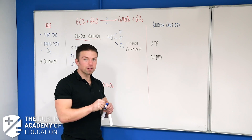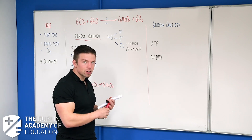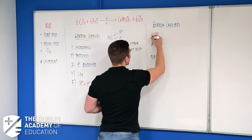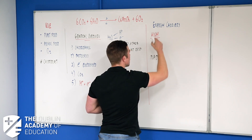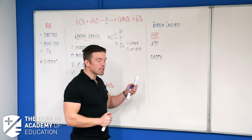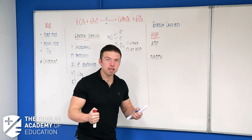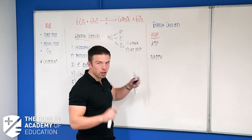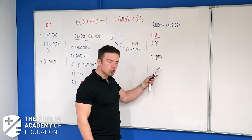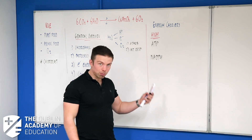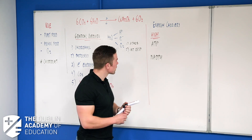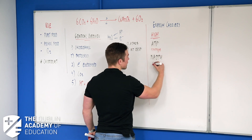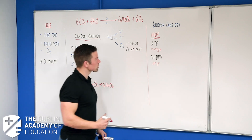ATP and NADPH are what is known as high energy molecules — they have loads of energy in them. ATP literally is the energy source your body makes to move, to think — anytime your body needs energy, it's inside ATP. NADPH is what the plant uses to carry protons and electrons, so NADPH is genuinely carrying protons and electrons.